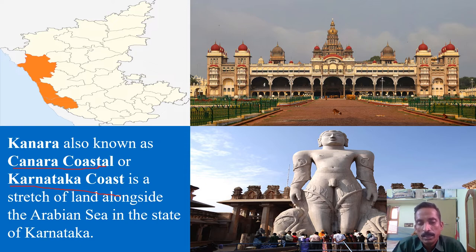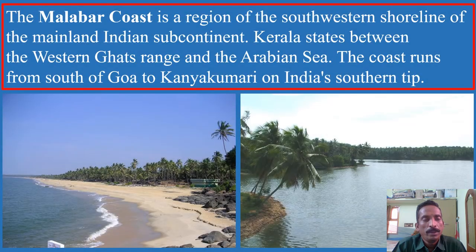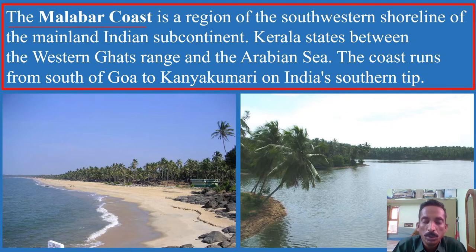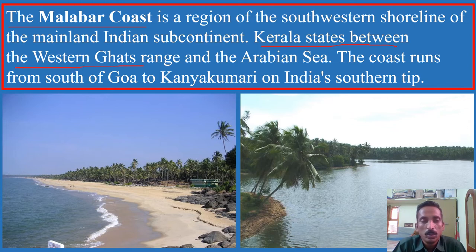Karnataka is a beautiful state with places like Mysore Palace and historical locations. The next region is Kerala, where the Malabar Coast is found. The Malabar Coast is a region of the southwestern shoreline of the Indian subcontinent. Kerala lies between the Western Ghats range and the Arabian Sea, and the coast runs from South Goa to Kanyakumari.